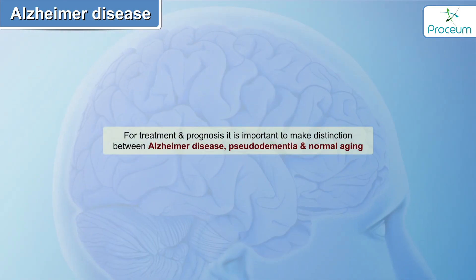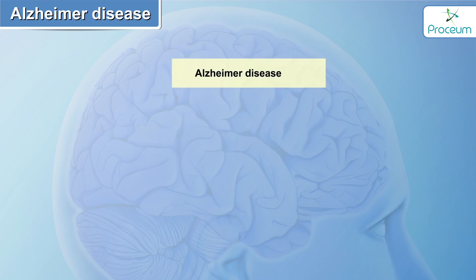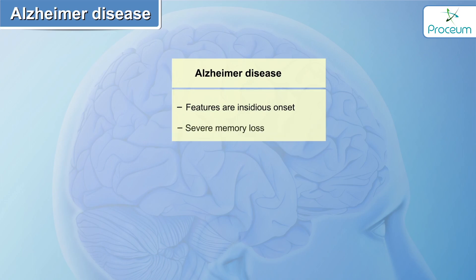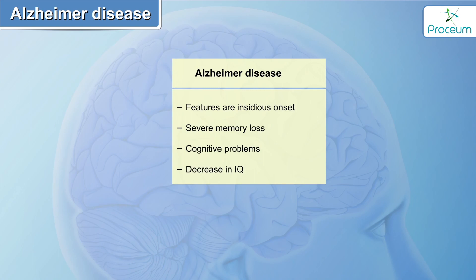For treatment and prognosis, it is important to distinguish between Alzheimer's disease, pseudodementia, and normal aging. In Alzheimer's disease, features are insidious in onset with severe memory loss, cognitive problems, a decrease in IQ, and significant disruption of normal life.